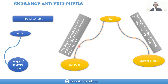But our eye is a little bit different. The image of a stop formed by the elements behind it is the exit pupil, and the image of the stop formed by the optical elements in front is the entrance pupil. That's like a regular optical system.